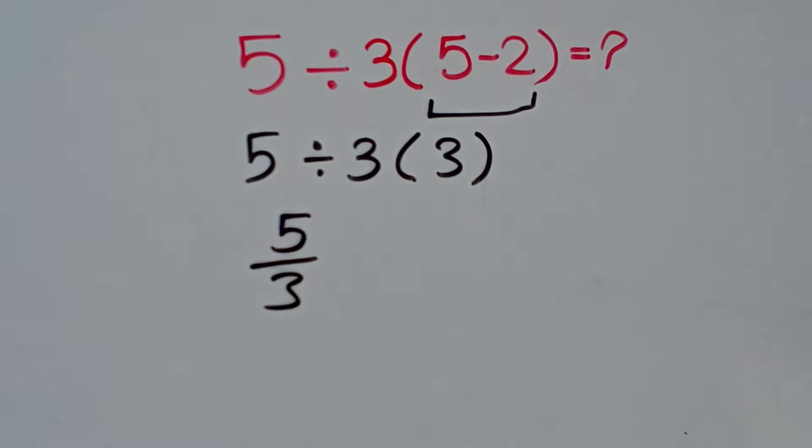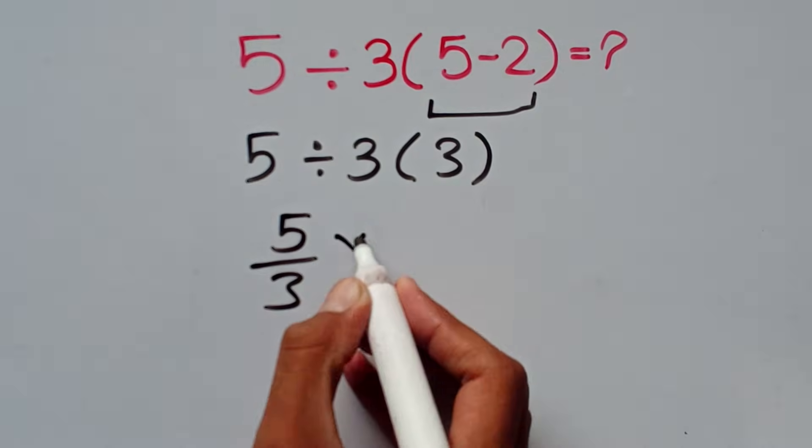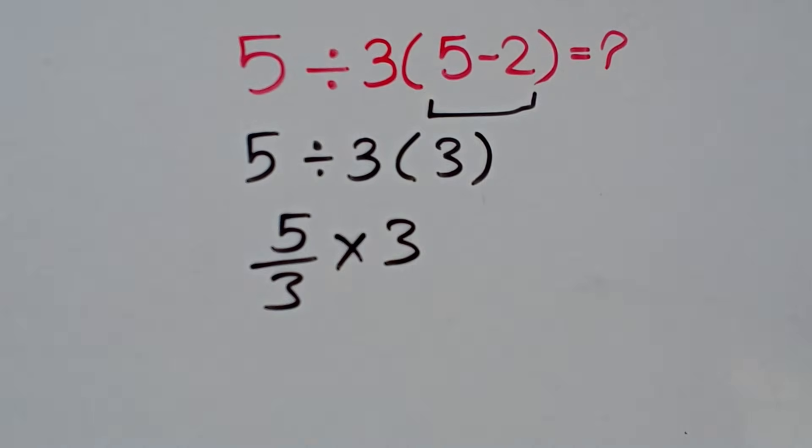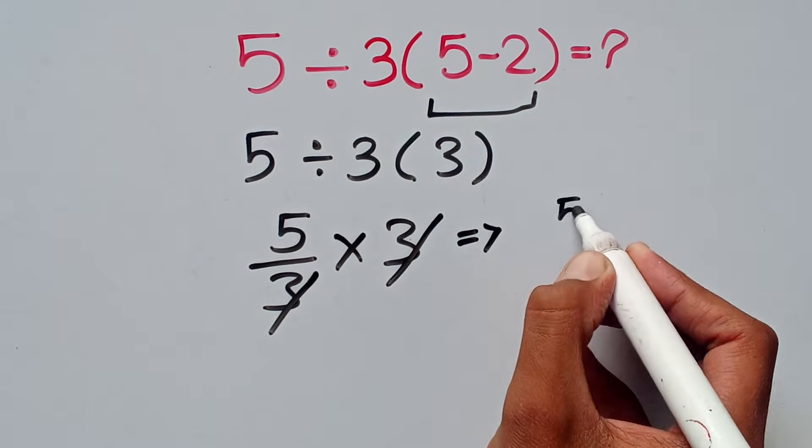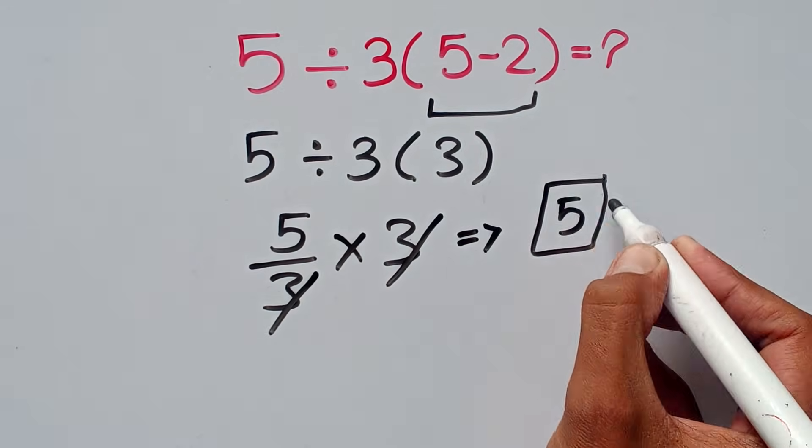So 5 divided by 3, we can write as a fraction, multiply by this 3. So the 3s cancel with each other, and the final answer of this math question is 5.